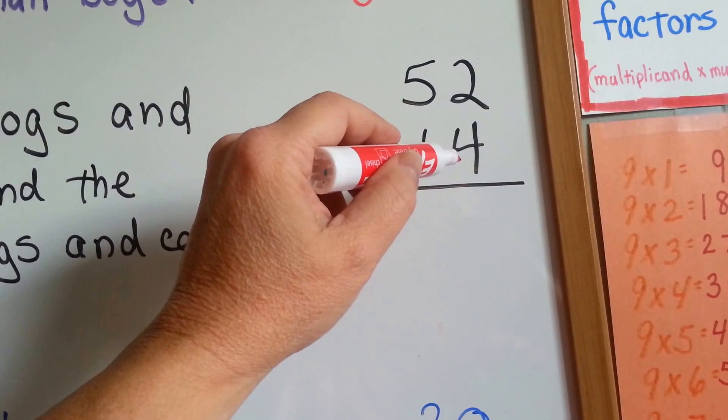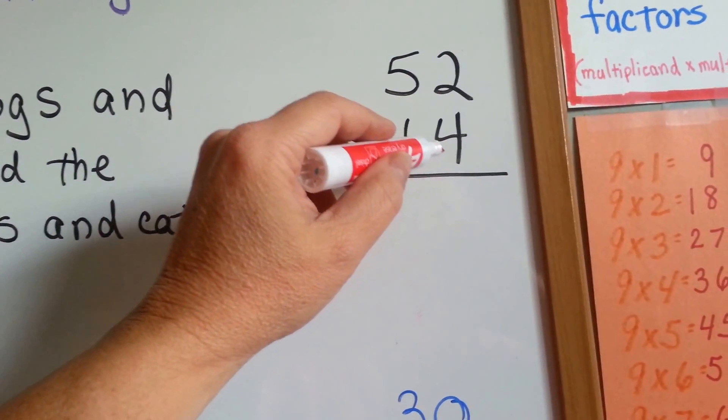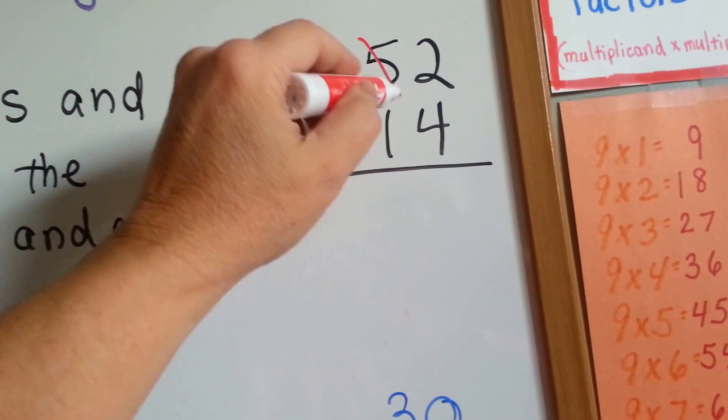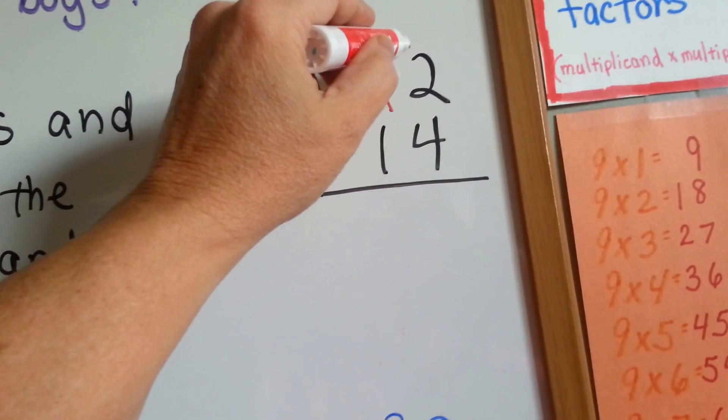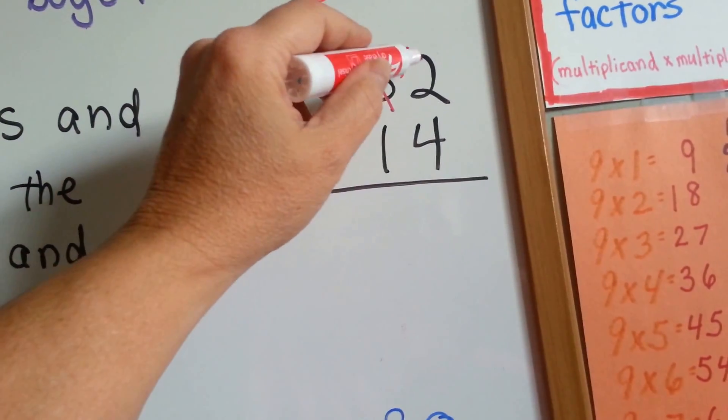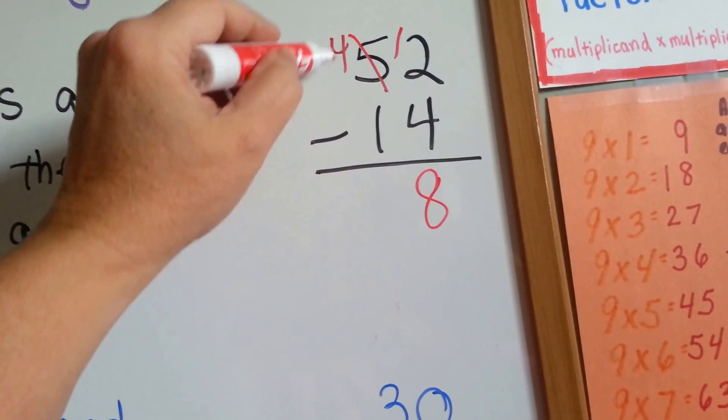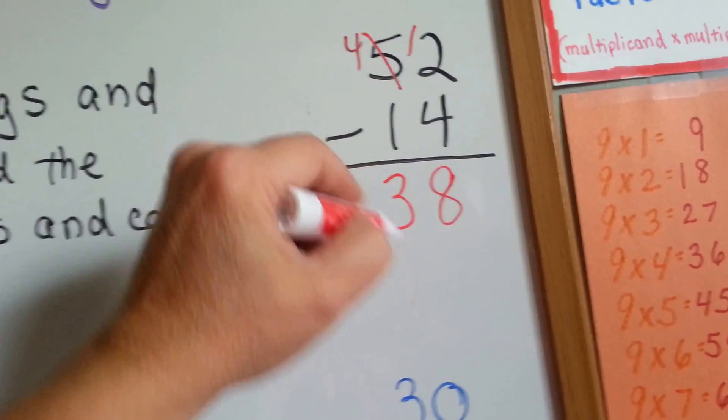Can you have 2 and take 4 away? Nope. So, we're going to have to regroup and borrow here. The 5 is going to become a 4 and the 2 is going to become a 12. 12 take away 4 is 8. 4 take away 1 is 3. 38.